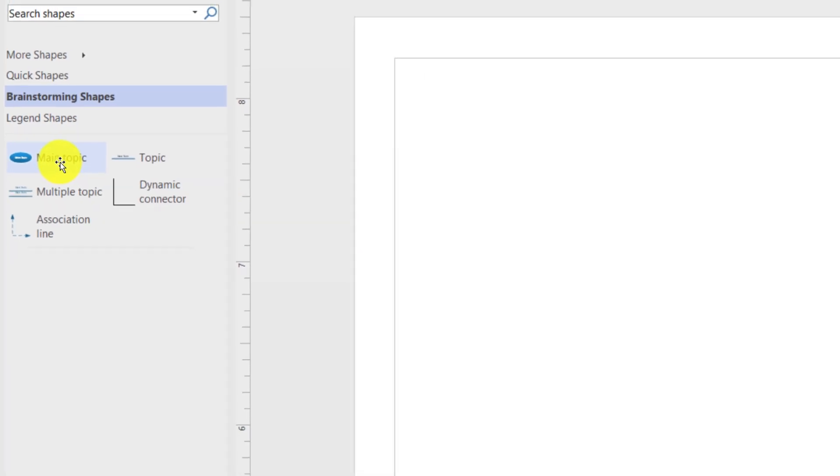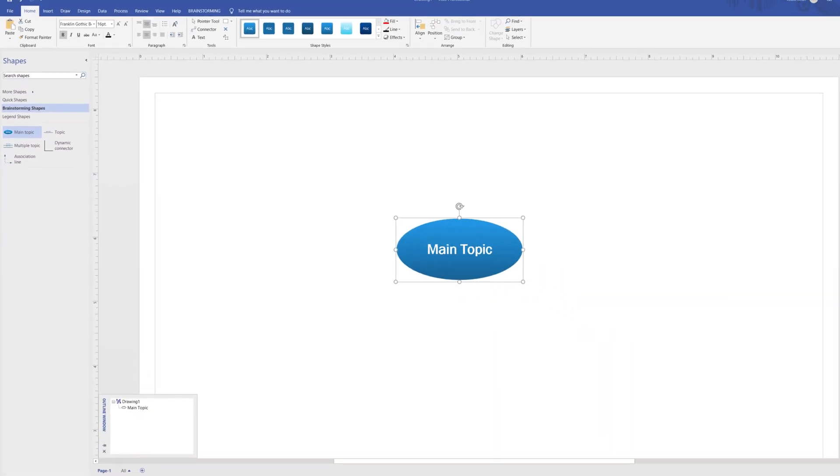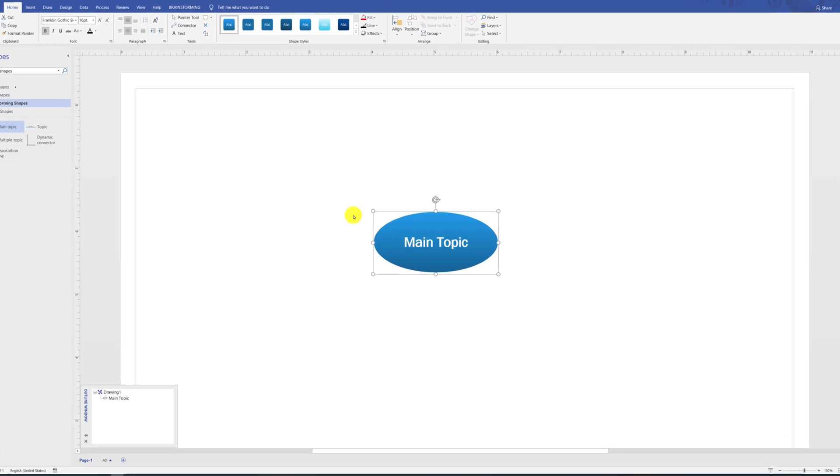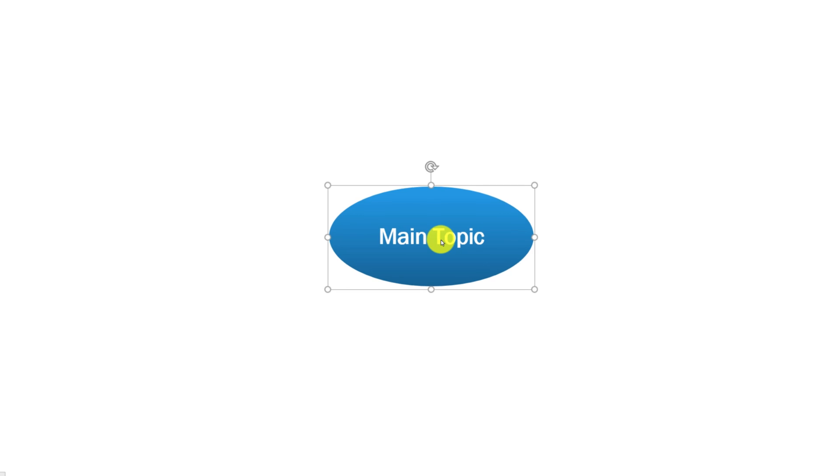To start building the diagram, you need to start with the main topic. Let's say that my main topic I'm trying to brainstorm is how to learn effectively. To capture it in the main topic bubble, I need to double-click on the bubble and type in the name.